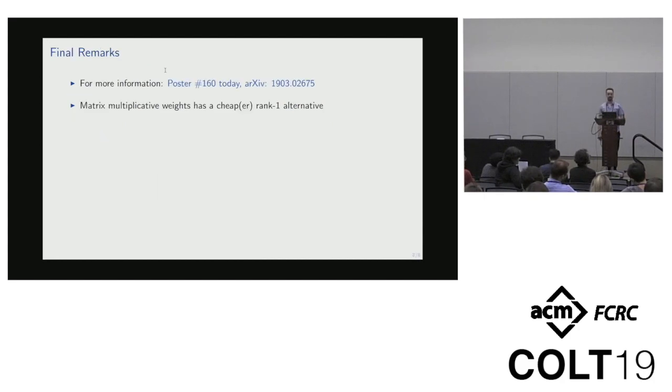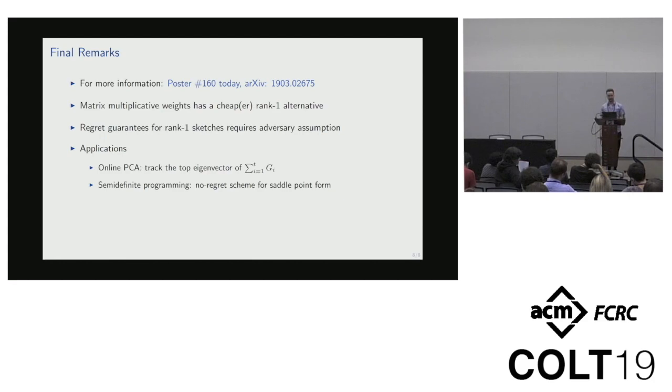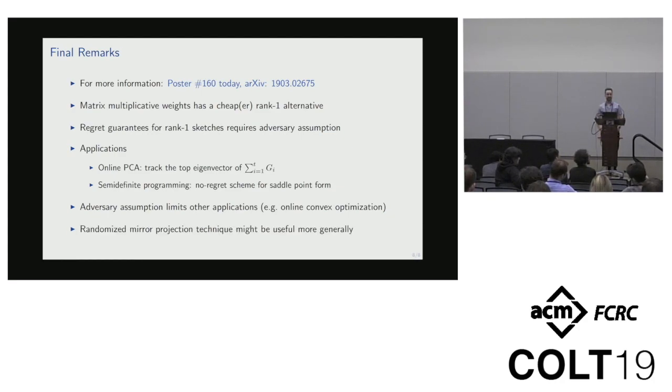To summarize, we found a cheaper way to do matrix multiplicative weights. We had to add an assumption about the adversary, but even with this assumption, it's applicable to online PCA and semi-definite programming. However, other applications like online convex optimization will be limited by our assumption. Nonetheless, we think this technique might be helpful in other settings as well. You're welcome to the poster. There's also the paper on archive. Thank you.